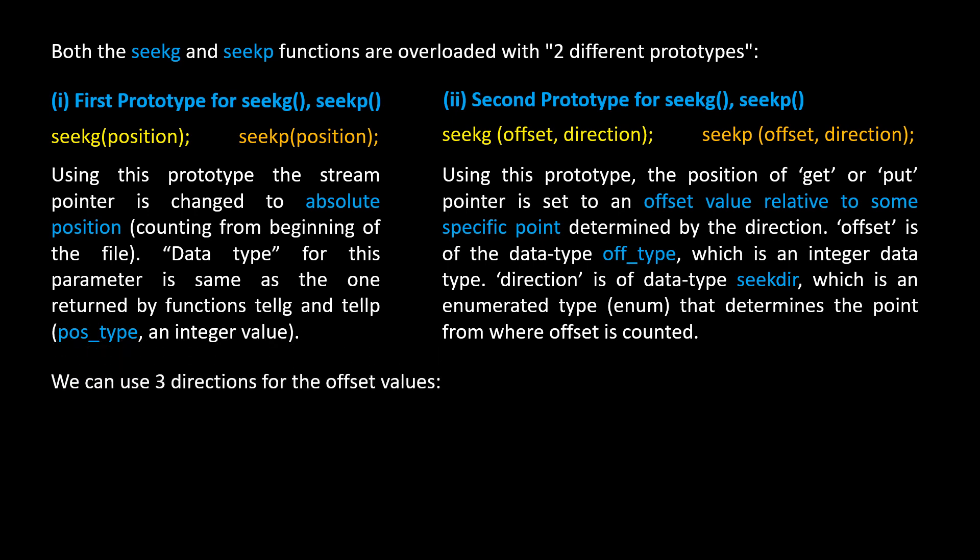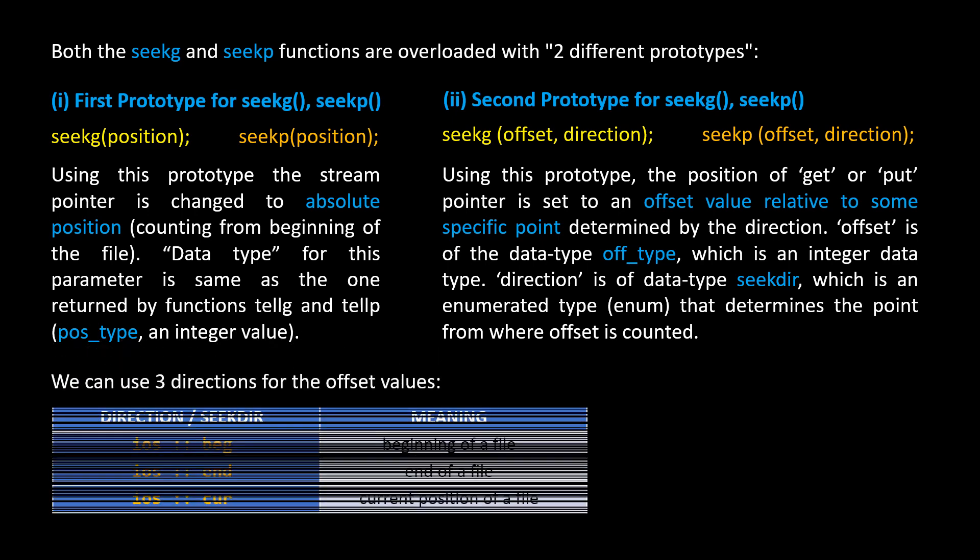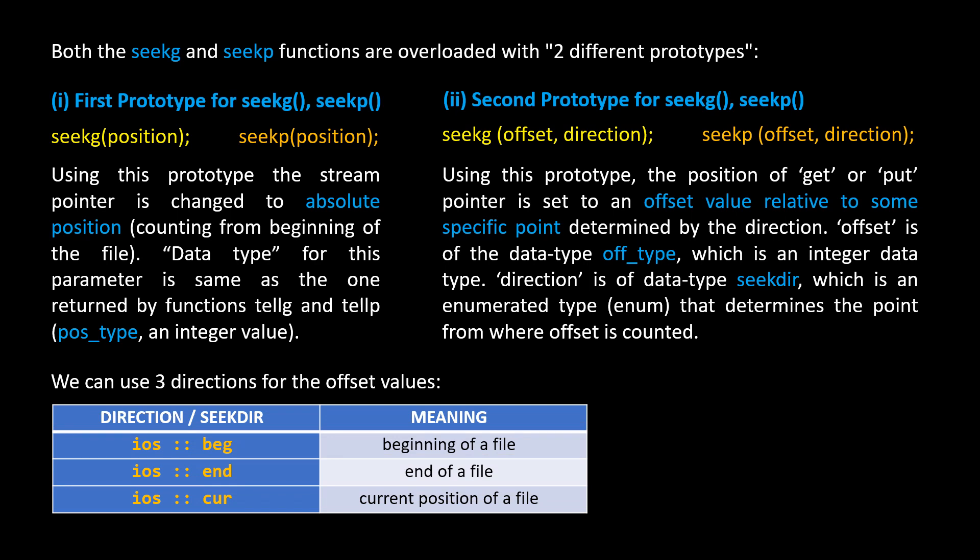We can use three directions for the offset values. ios::beg refers to the beginning of a file. ios::end refers to the end of a file. ios::cur refers to the current position within the file.